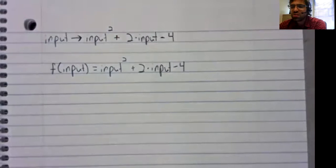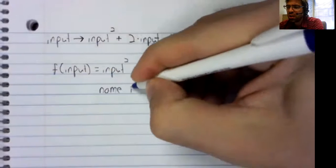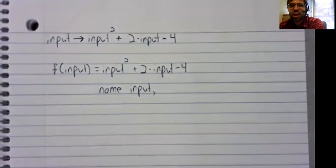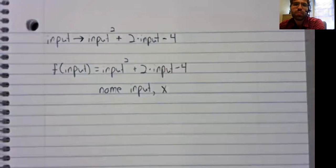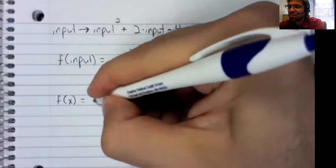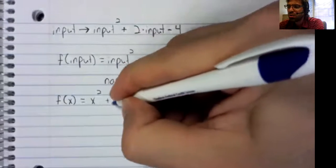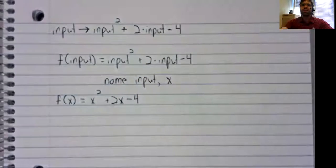To write this compactly, in addition to naming the function, let's name the input. The most common name for an input is x. And we would write f of x equals x squared plus two times x minus four.